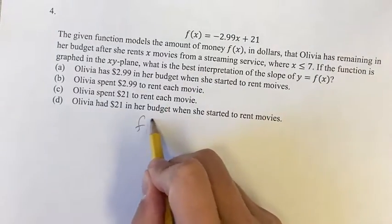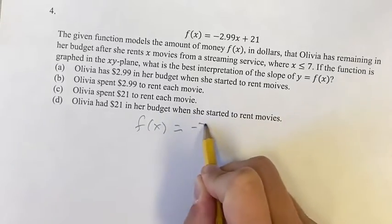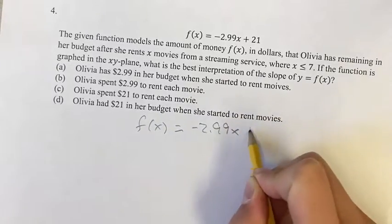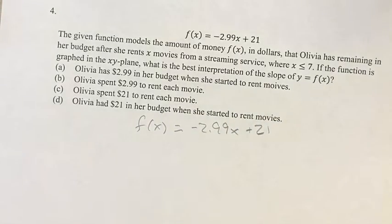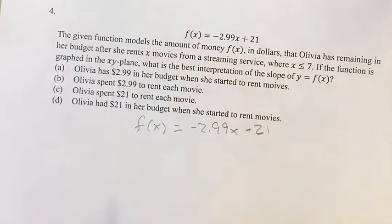In this problem, we're looking at the equation f(x) = -2.99x + 21. We're given the situation for this problem, which we can look at in a second.